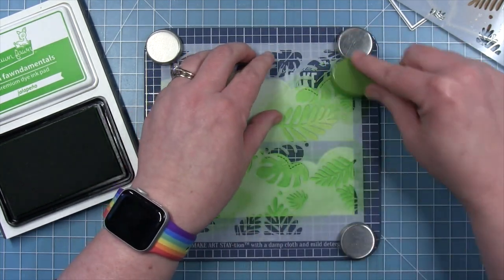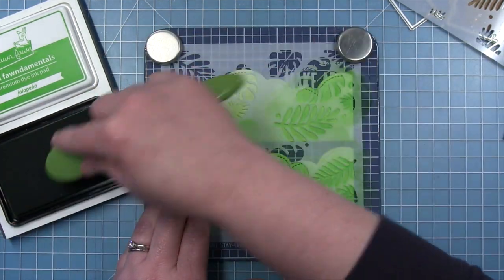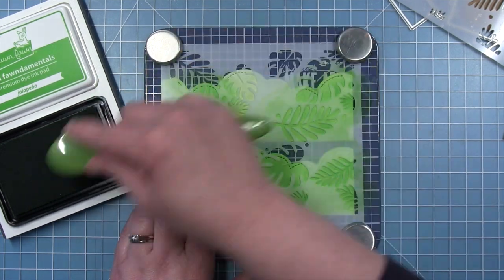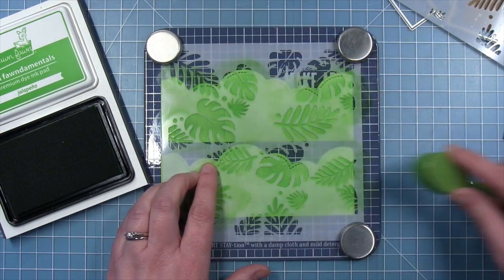So I'm now moving on and inking up the second one. And once I get all of the leaves on these two cloud wraparound pieces inked, I'll move on to the second stencil.